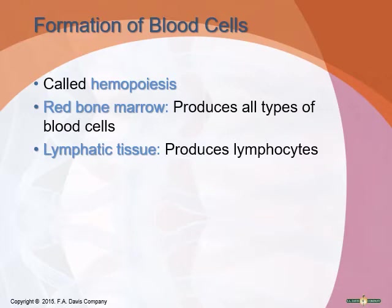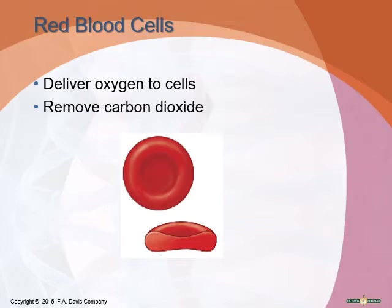Every blood cell — whether red, white, or platelet — begins as a stem cell, then specializes into its specific blast cell, and further develops into its specific blood cell. Please familiarize yourself with all of these generations from stem cell to blast cell to the very specialized cells, found in your book on page 254.